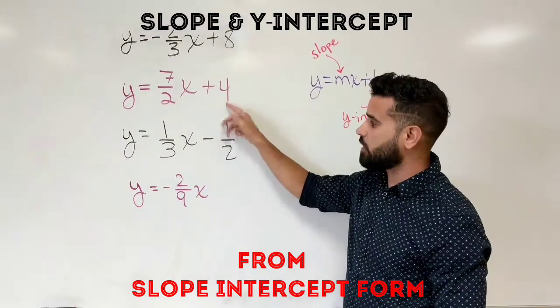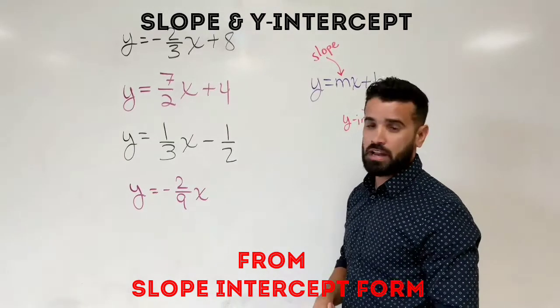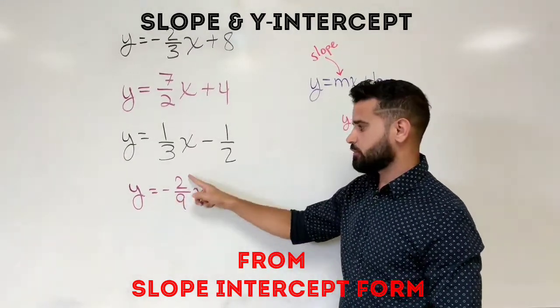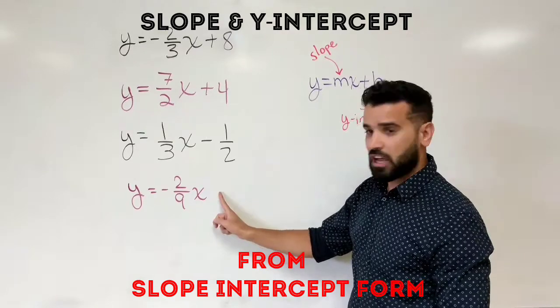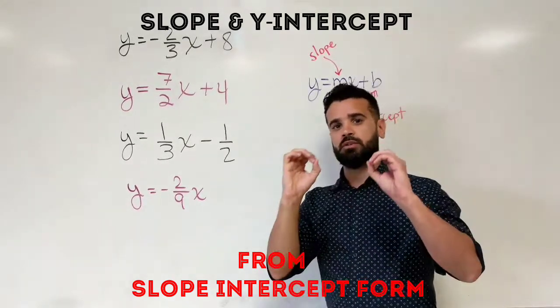Here our slope is one-third and our y-intercept is negative one-half. And over here we have a negative slope of two-ninths, but our y-intercept is not there. When it's not written, it's zero.